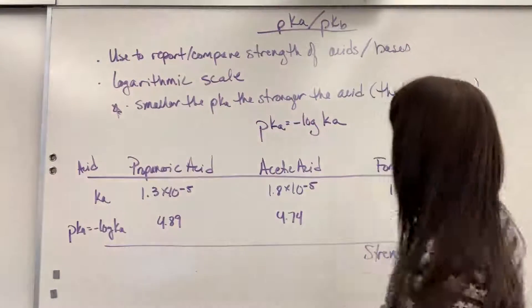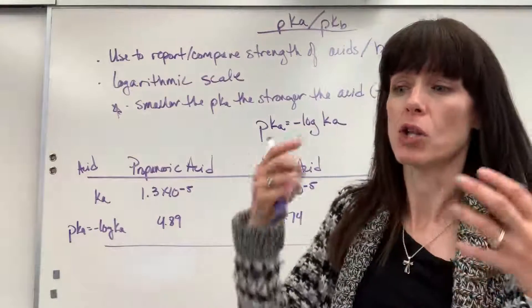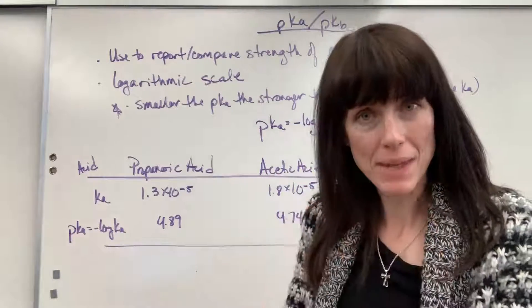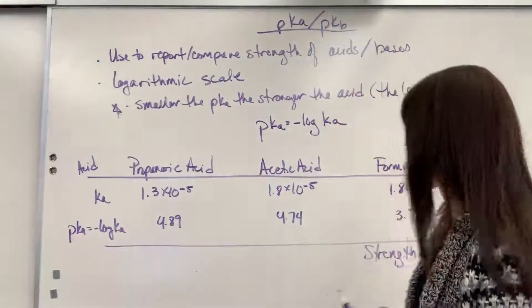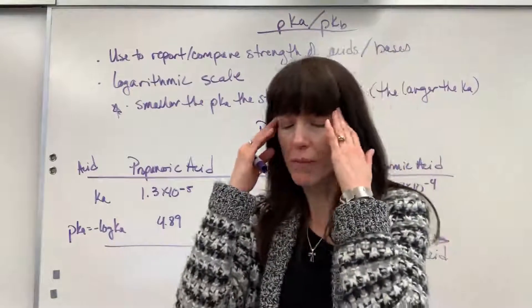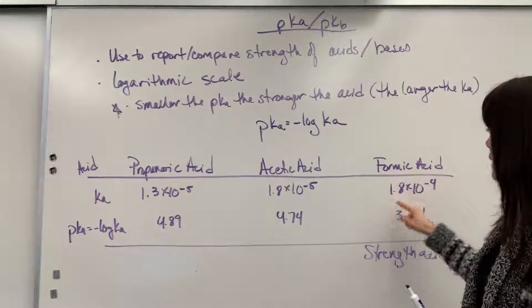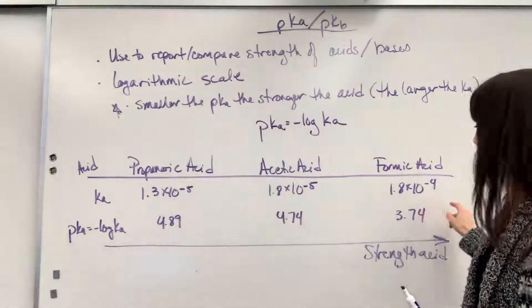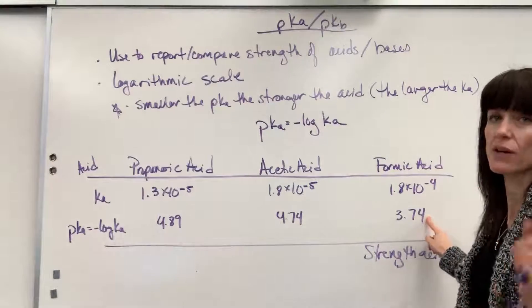Now reverse that. We could talk about pKb. So if I'm talking pKb, it's going to be the larger the Kb, the stronger the base, the smaller the pKb. So same logic, it's just shifting your brain from an acid to a base. If I change all this to bases, the bigger the Kb, the stronger the base, the smaller the pKb, the stronger the base.